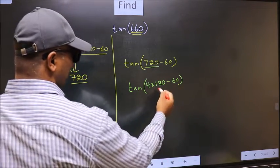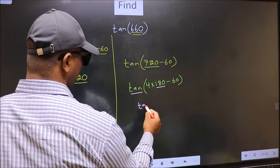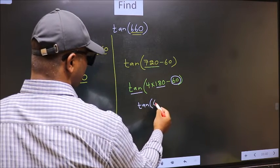Next, here we have 180. So, tan is not going to change. It will remain tan. And inside, we get this angle 60.